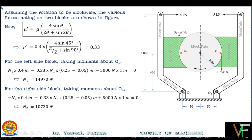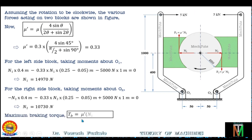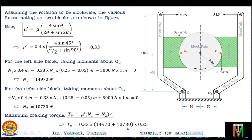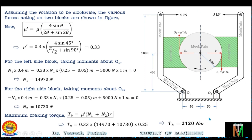Now we can calculate the maximum braking torque: Tb = μ'(N1 + N2) × R = 0.33 × (14,970 + 10,730) × 0.25 = 2120 N·m. This is how you perform the analysis of double block brake. I hope you have understood the method of taking moments about O1 and O2 and calculating the braking torque in case of double block brake. This is all for today's lecture. In case of any doubt, please feel free to contact me. Thank you.